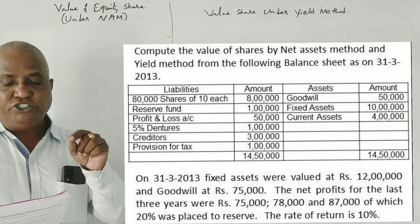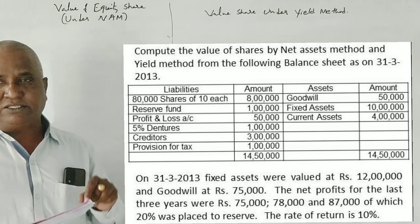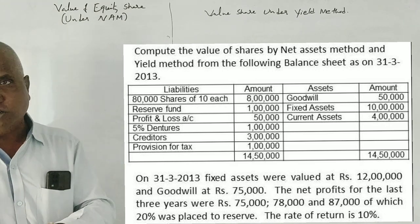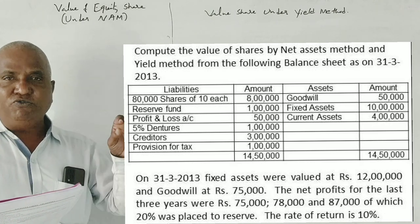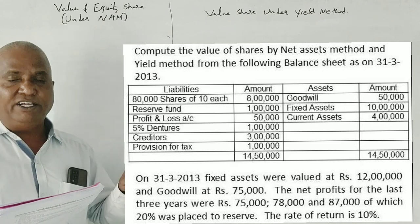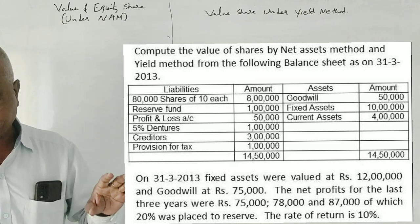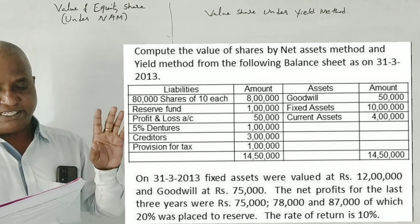80,000 shares of rupees 10 each equals 8 lakhs. We have preference shares and equity shares, reserve, profit and loss account, 5% debentures, creditors, provision for tax. Goodwill, fixed assets, current assets.